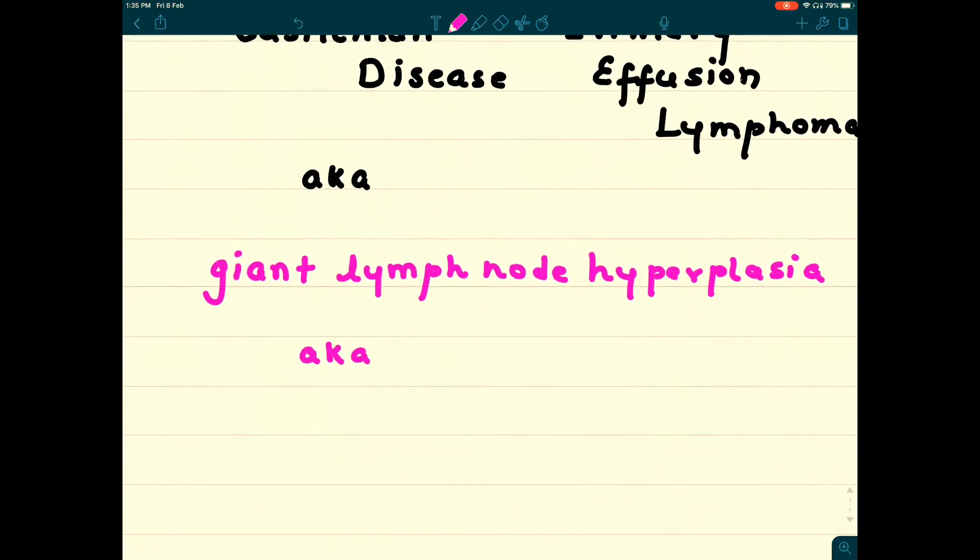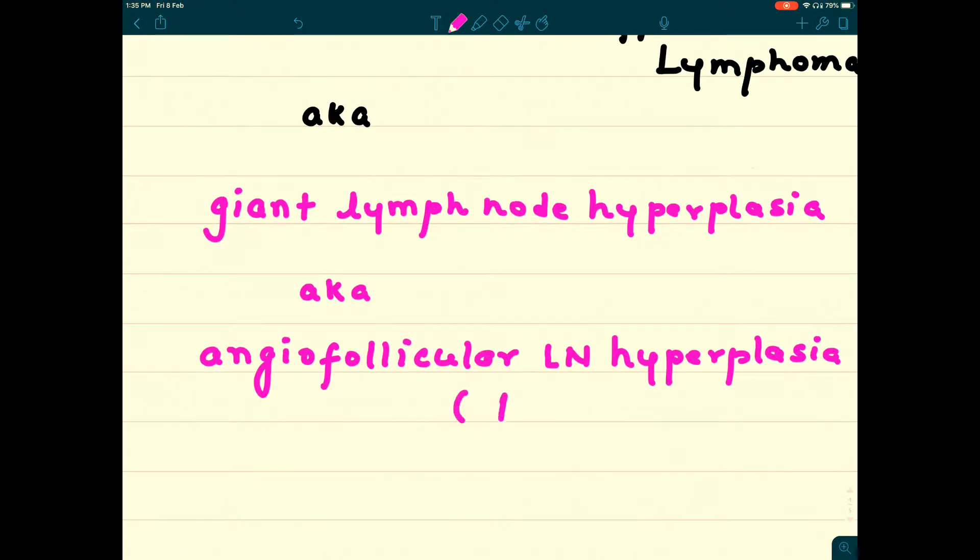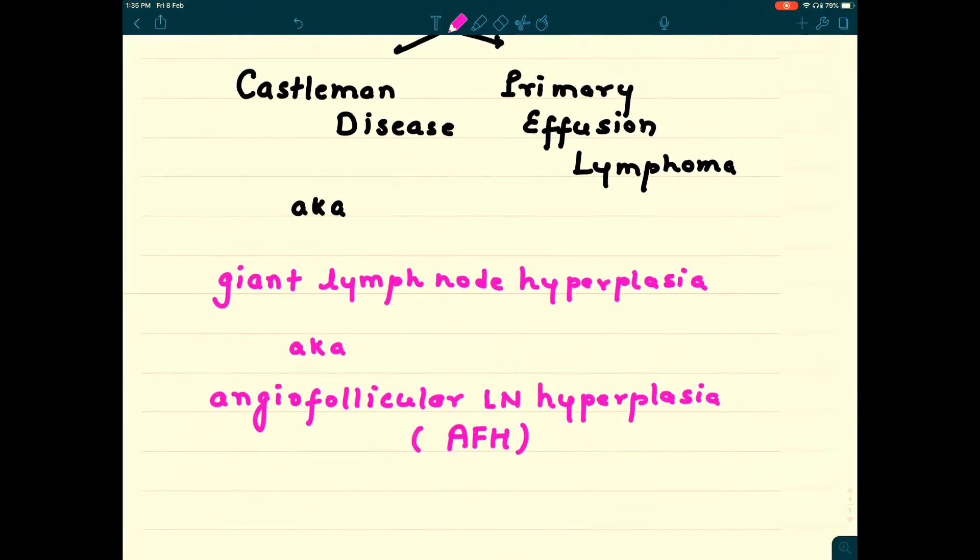Another name of the same disease is angio-follicular lymph node hyperplasia. It's a pathological nomenclature. Angio because it involves blood vessels, follicular because of involvement of follicles of the lymph node, and hyperplasia as the hyperplasia of lymphoid tissue is going on.